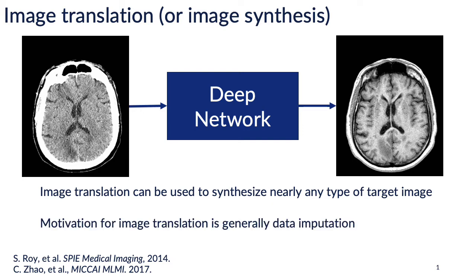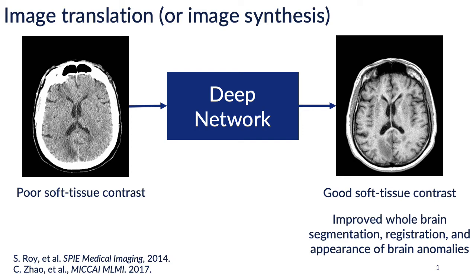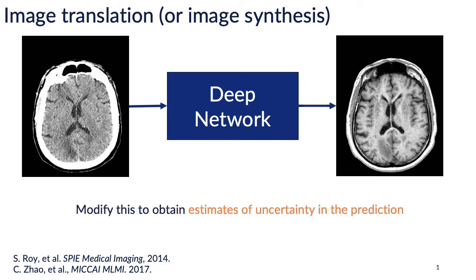The primary motivation is for data imputation — for example, filling in a missing image from a patient for a machine learning pipeline. We look at CT to MR image translation because CT has poor soft tissue contrast compared with MR images. Our lab has shown that you can get better results in whole brain segmentation and registration with the synthesized MR image compared to using the CT alone. In this work, we'll modify the CT to MR image translation network to estimate two quantities of uncertainty in the prediction.